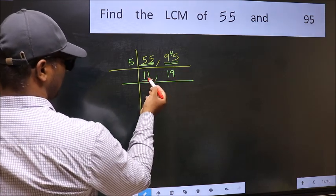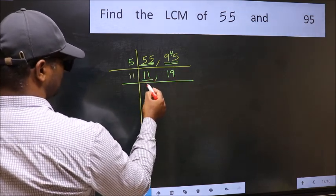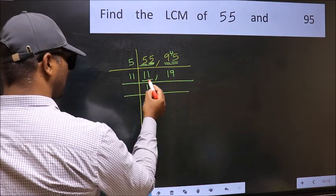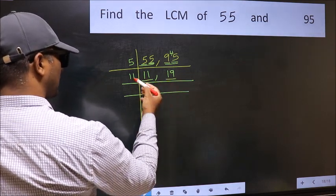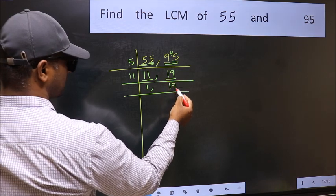Now here we have 11. 11 is a prime number, so 11 ones is 11. The other number 19 is not divisible by 11, so you write it down as is.